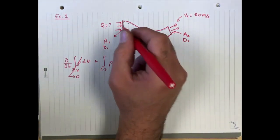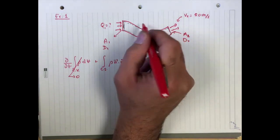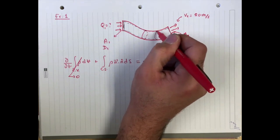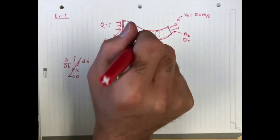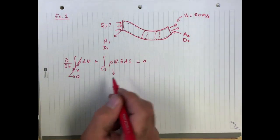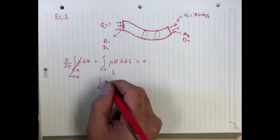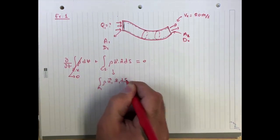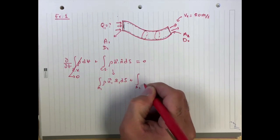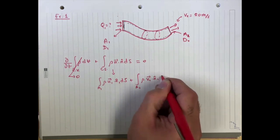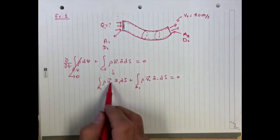Now we only have two surfaces where there's flow coming in and flow leaving because everything along the pipe diameter over here, the surface, the velocity is tangential. So there's nothing coming in. So this really degenerates to the integral over the area a1, of rho u1 dot n1 ds plus the integral over area a2 of rho v2 dot n2 ds equals zero.